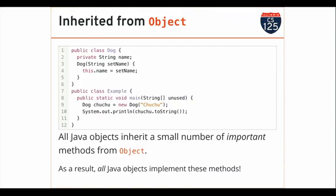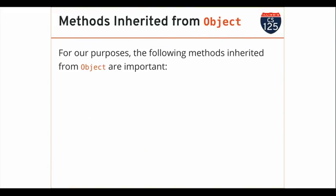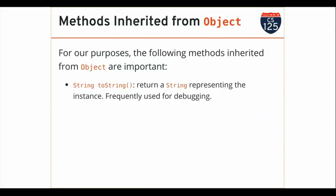There are three that are important for this class. First: toString — every single Java object can return a representation of itself as a string. Second: equals — returns a boolean indicating whether this object is the same as some other object. Third: hashCode — every Java object is required to return an integer that uniquely identifies it, which will be extremely useful when we talk about hashing and maps later.